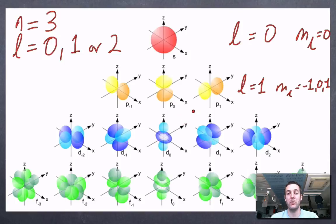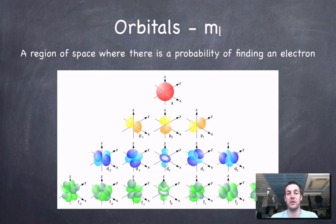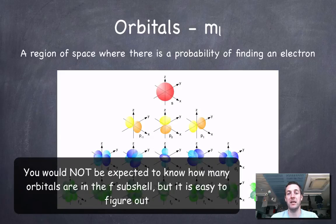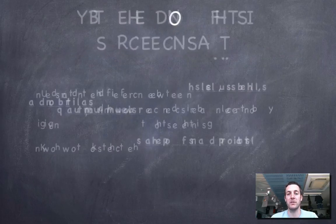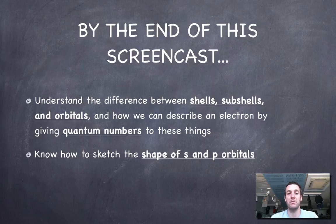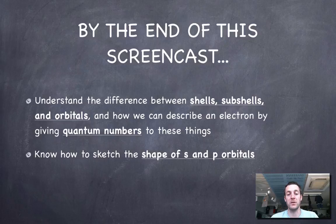What we need to know about shells, subshells and orbitals is that an orbital is a region of space where we can find an electron. Orbitals are found in subshells, and subshells are found within shells. We also need to know how many orbitals and how many subshells there are in each shell. Hopefully the quantum numbers give us a handy way of remembering that, but you might choose to remember it in different ways.